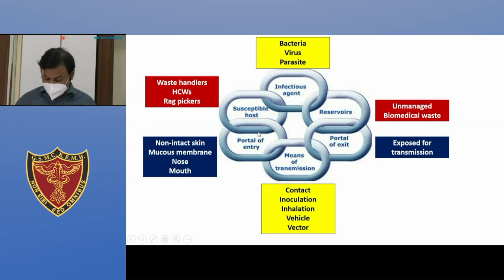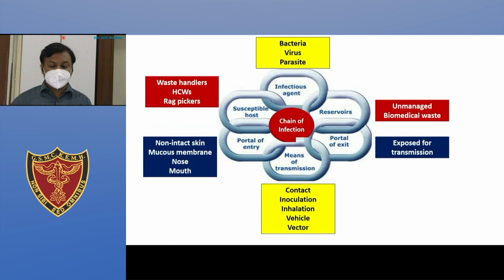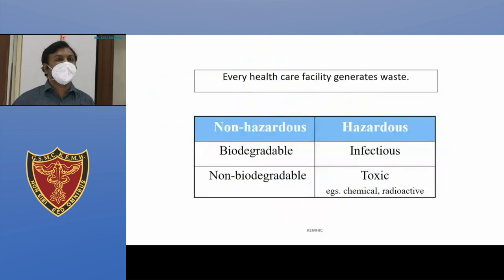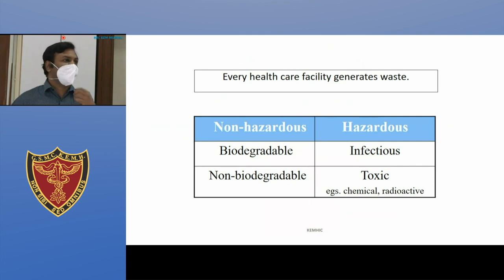This is basically the chain of infection: susceptible host, infectious agent, reservoir, portal of exit, means of transmission, and portal of entry. You just have to break the chain of infection, and it's very simple. Just when you generate waste, if you dispose it properly, the chain breaks. It hardly takes any extra time.